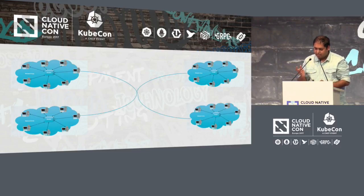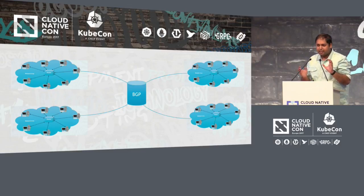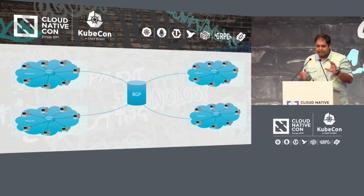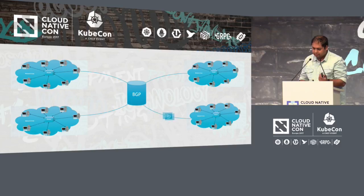So BGP solves that problem. What BGP does is: BGP has nothing — it has an IP table, it has entries for the direct hops, and if there is one more hop, then it has the hop for a next BGP peer. And that's it. So if you want to send your IP packet, that's all BGP does.